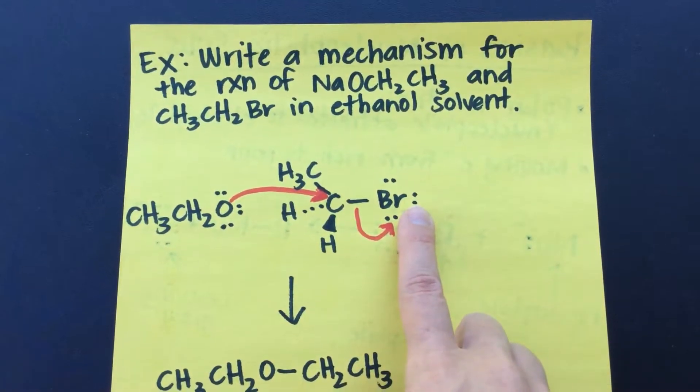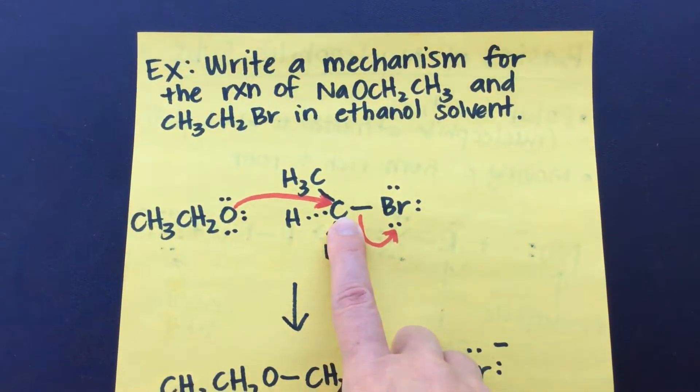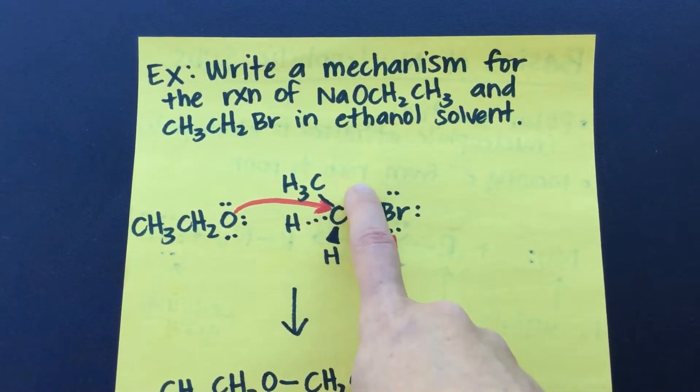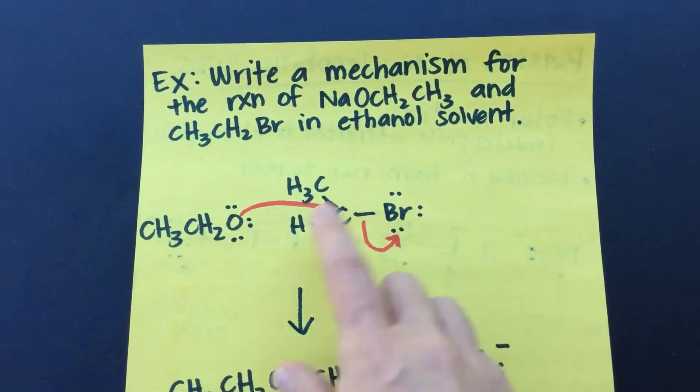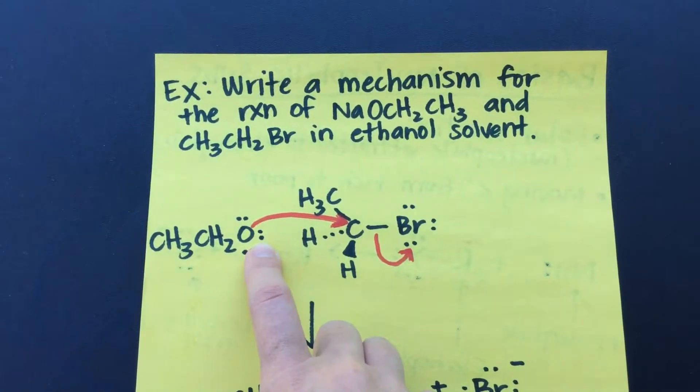Okay, because of this halogen here, that means that this carbon is going to be electron poor, right? So that's my partial positive. That carbon is going to be partial positive. Because this halogen here, that's going to be my partial negative. And this oxygen here, it's got plenty of electrons hanging around, right?